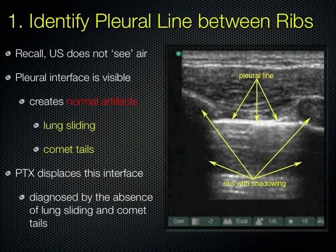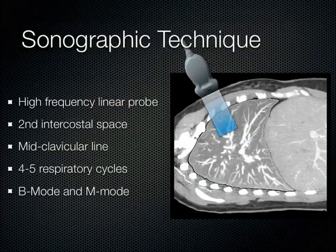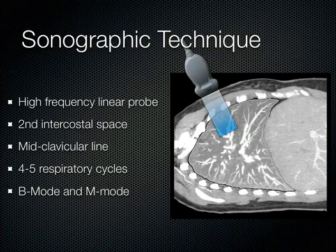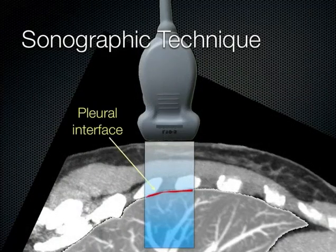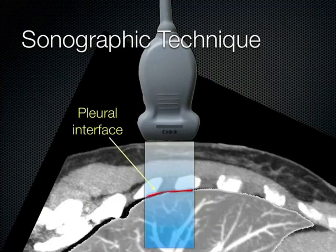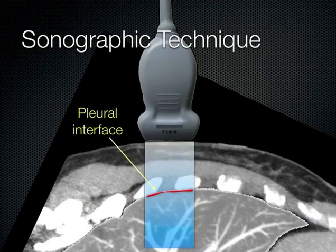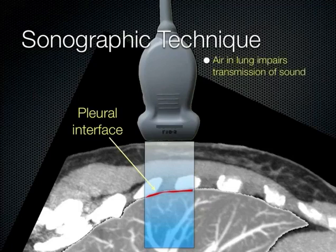Using the high-frequency probe in a craniocaudal sagittal orientation, starting at the second intercostal space at the mid-clavicular line, watch through several modes of breathing. You're looking for the lung to slide back and forth. The lung moves craniocaudally, so the vertical orientation best captures it. Remember air impairs sound transmission — when the lung is up, you may see faint B-lines or A-lines, but you won't see deep into the lung. You should be able to see the pleural interface and sliding. If the lung has collapsed, it drops away and you cannot get your ultrasound beam through that pocket of air.